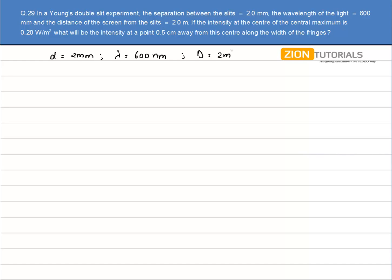If the intensity at the center of the central maxima, that is the value of I_max, is given as 0.20 watt per meter square, what will be the intensity at 0.5 cm from this center along the width of the fringe?